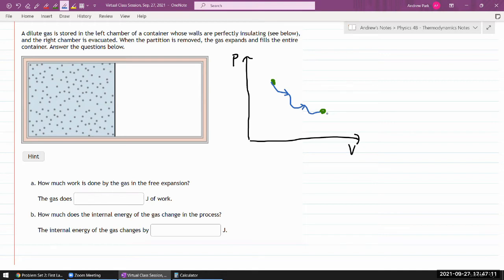And what you have in this question is that it says the gas is stored in the left chamber. So this could be our initial state for that gas - it has some pressure and some volume. The walls are perfectly insulating and the right chamber is evacuated. When the partition is removed, the gas expands and fills the entire container.